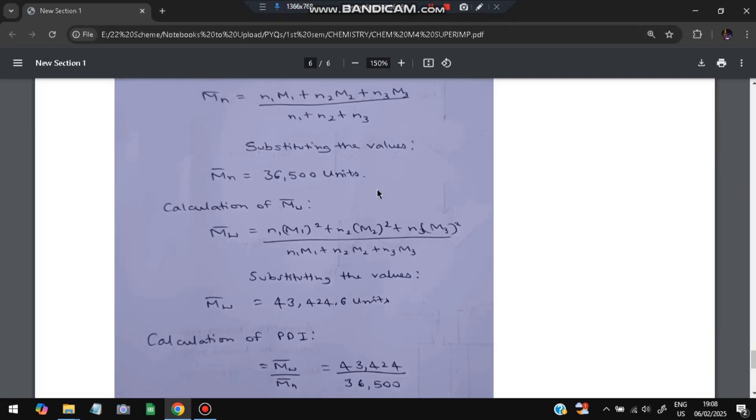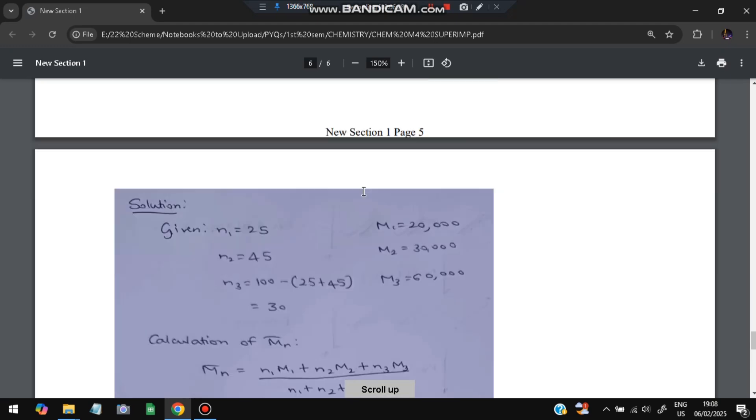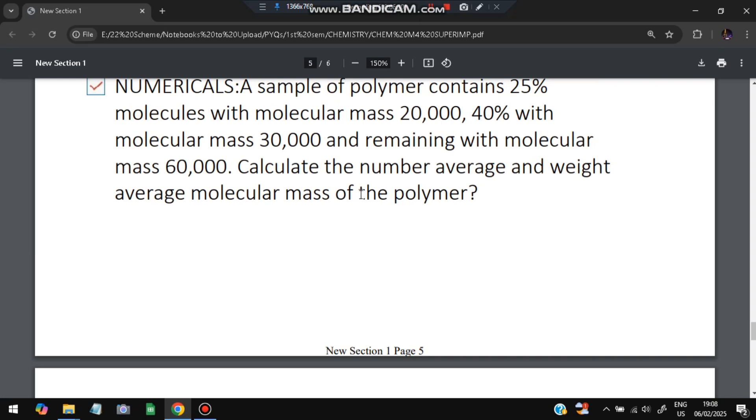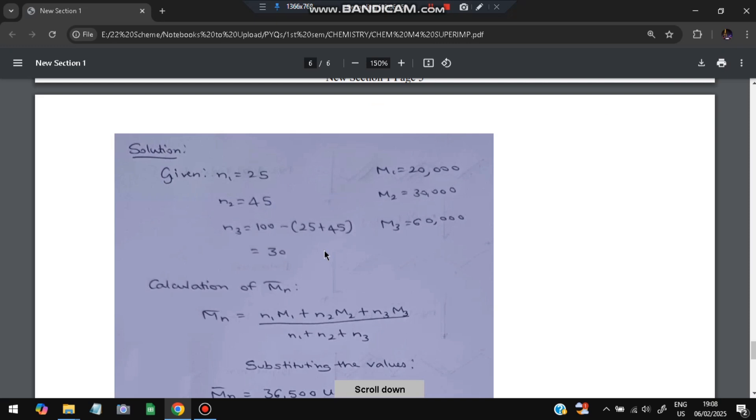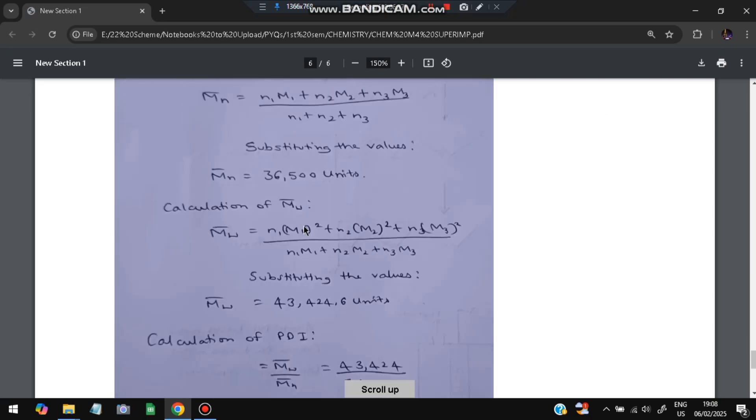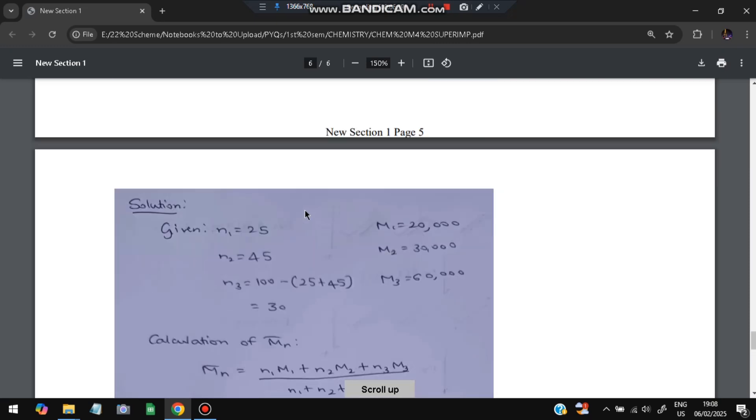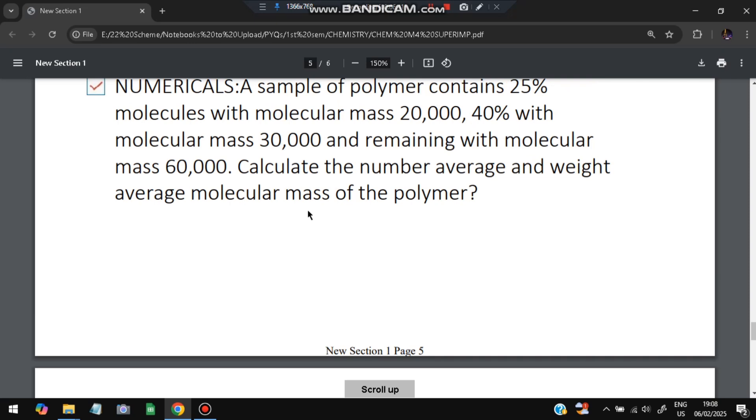And the calculation of Mw: that will be (n1×m1² + n2×m2² + n3×m3²) / (n1×m1 + n2×m2 + n3×m3). So Mw will be getting as 43,424.6 units. That is the molecular mass, the weight. The first one we calculated is the number average, second is the weight we calculated.